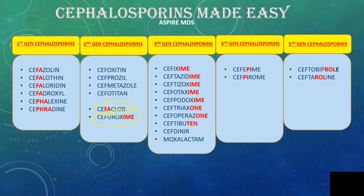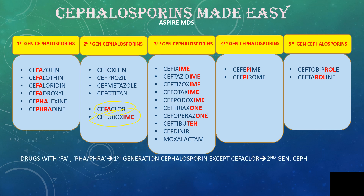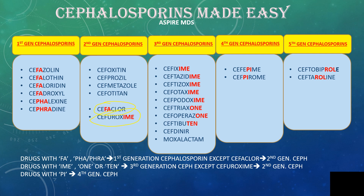To summarize the techniques: drugs with FA, PHA, or PHRA fall into the first generation Cephalosporins — exception is Cefaclor. Drugs with IME, 1, or 10 fall into the third generation — except Cefuroxime, which is second generation. Drugs with PI are fourth generation, and drugs with ROL are fifth generation Cephalosporins.